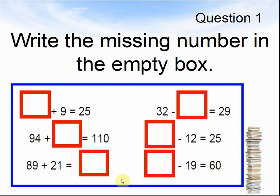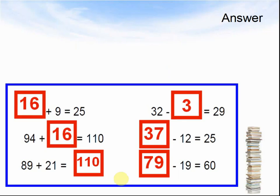Pause the video until you are ready to see the answer. Here comes the answer. The answers were: 16 plus 9 equals 25. 32 take away 3 equals 29. 94 plus 16 equals 110. 37 minus 12 equals 25. 89 plus 21 equals 110. 79 minus 19 equals 60.